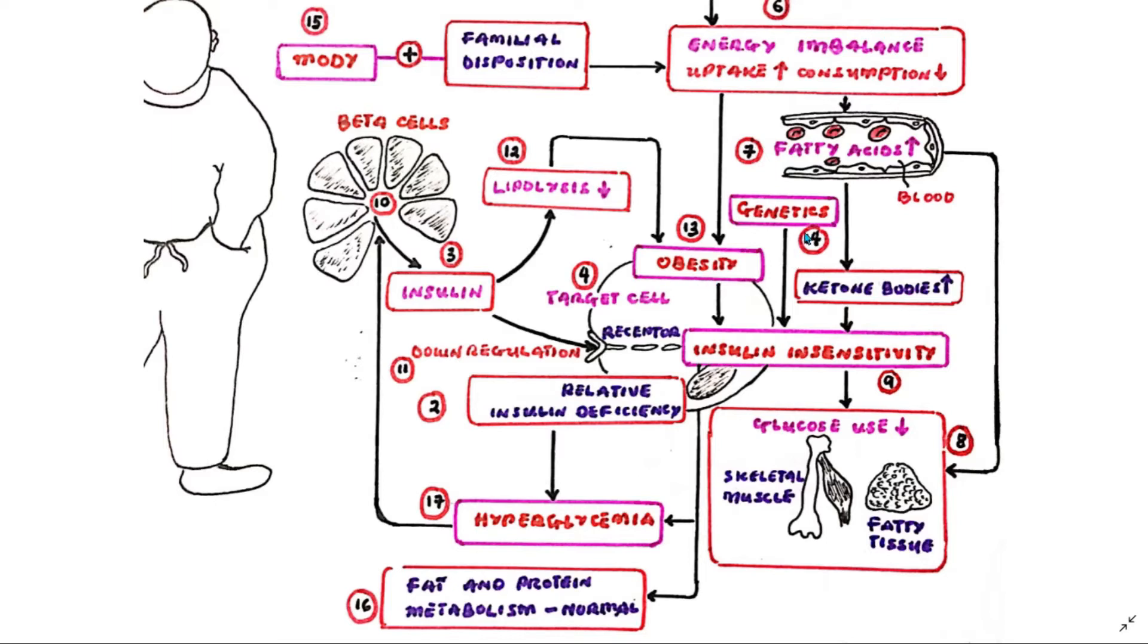Obesity is an important trigger but not the sole cause of type 2 diabetes. More important is genetic disposition. In this case, several genes have already been defined and promote development of obesity and type 2 diabetes.